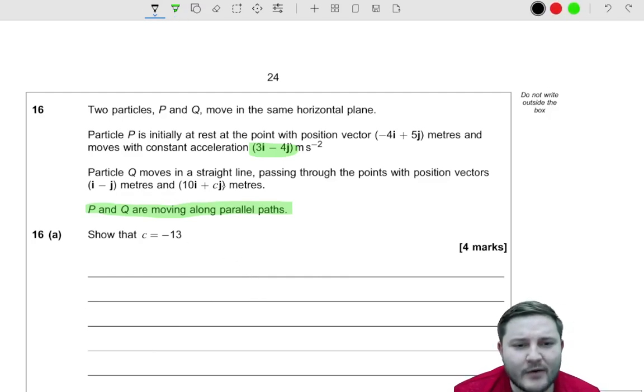So one thing we can actually work out is basically what is the gradient almost between these two positional points here, because we know that Q moves through both of these. So I'm going to write them as column vectors because I think column vectors are easier than i and j notation. So I'm going to write this as a column vector (1, -1) because it's i and then minus one j. And the other one I'm going to write as (10, c).